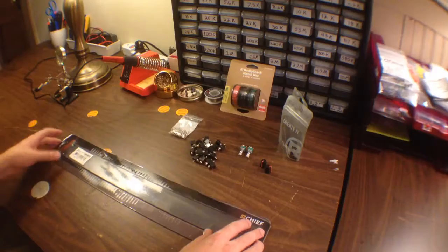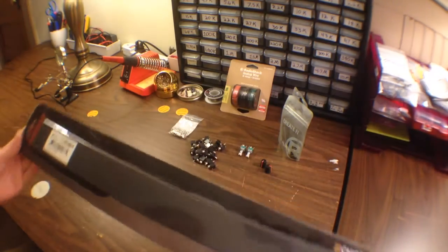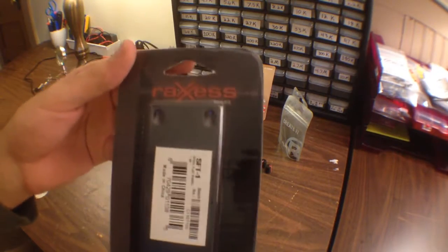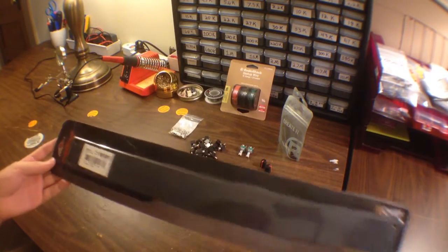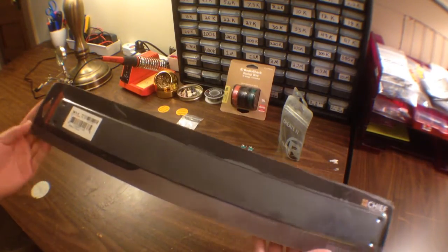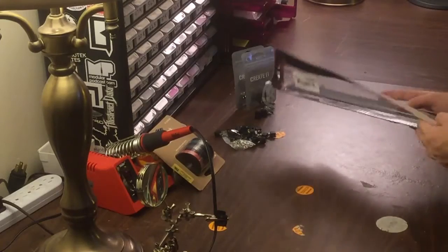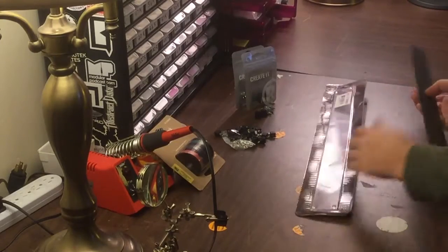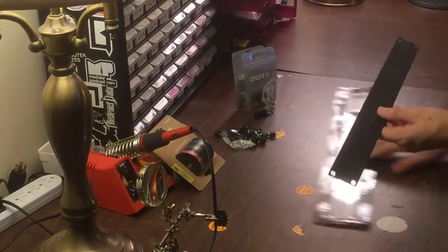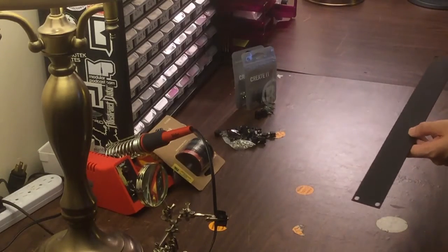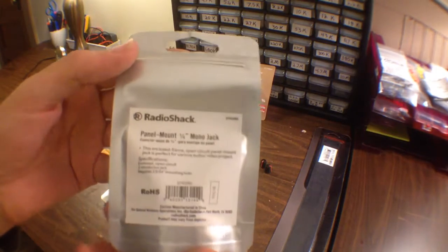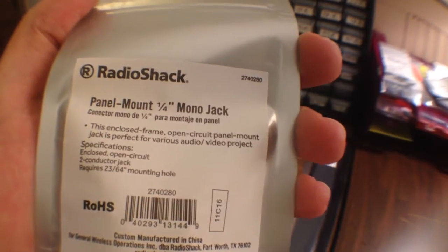My euro rack system is already in a standard 19 inch rack, so I'm going to use one of these blank rack panels. You could still do the same thing if you want to make it a euro rack module, just a standard module. You could pick up some blank euro rack panels. But since mine's already there I'll just use this.